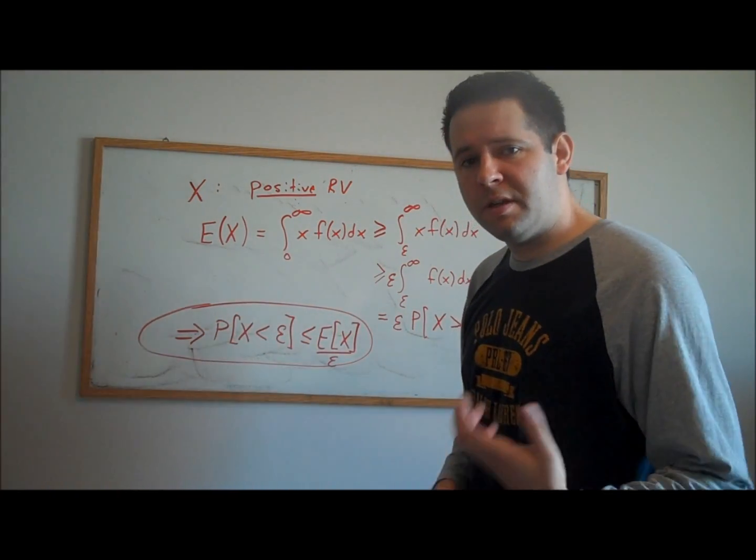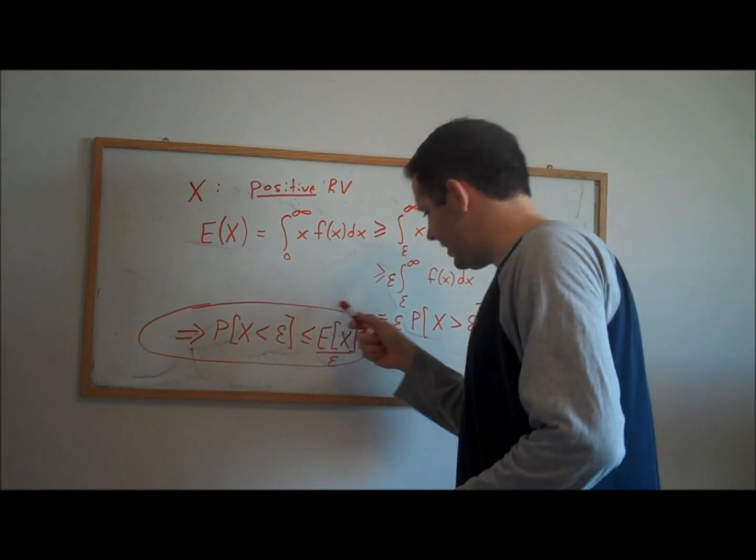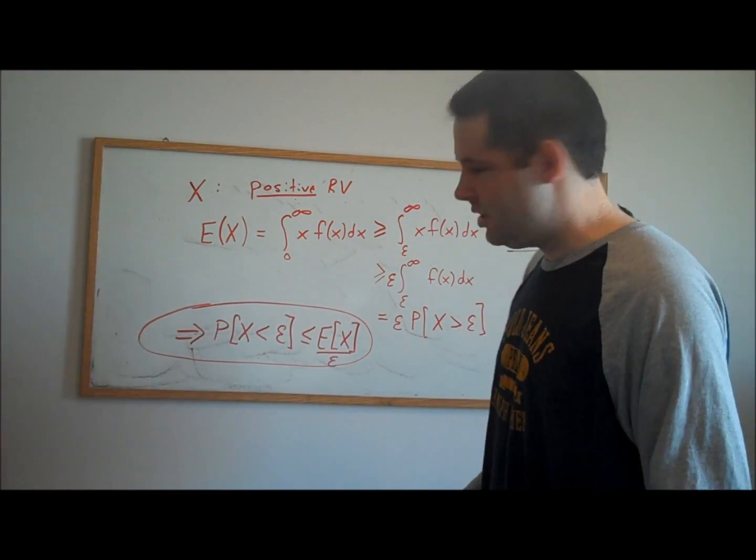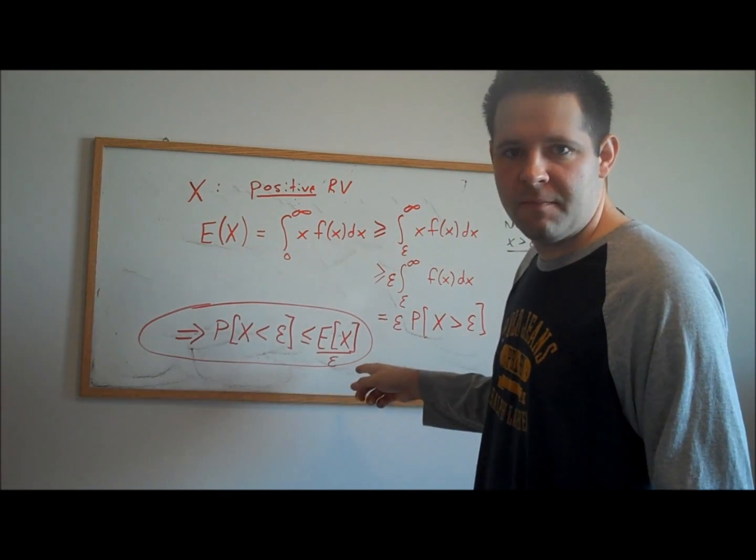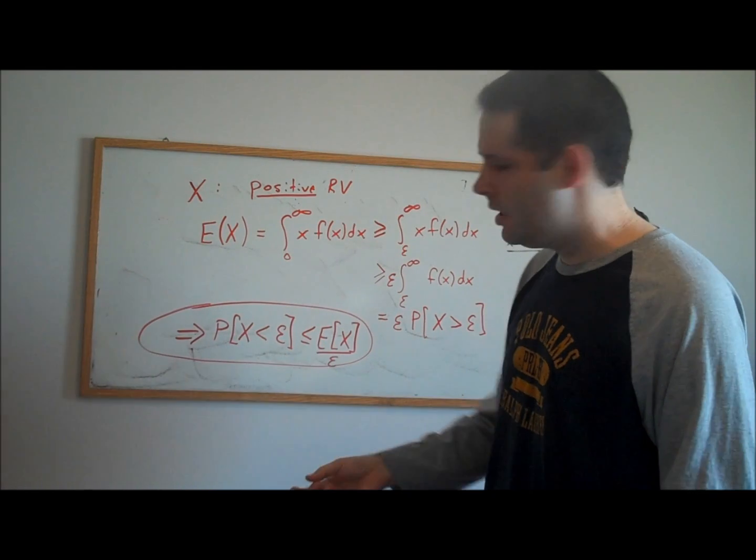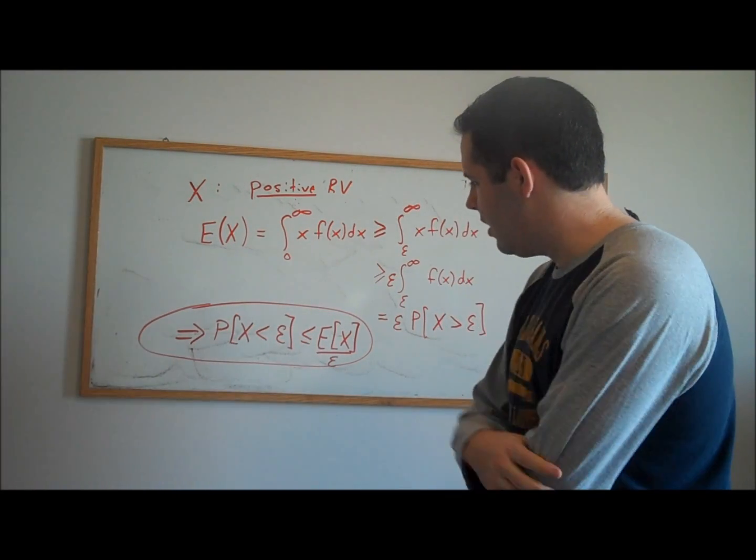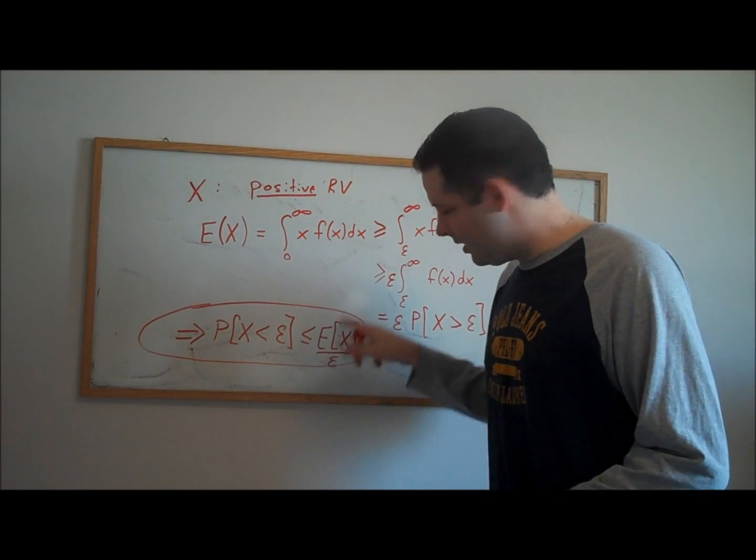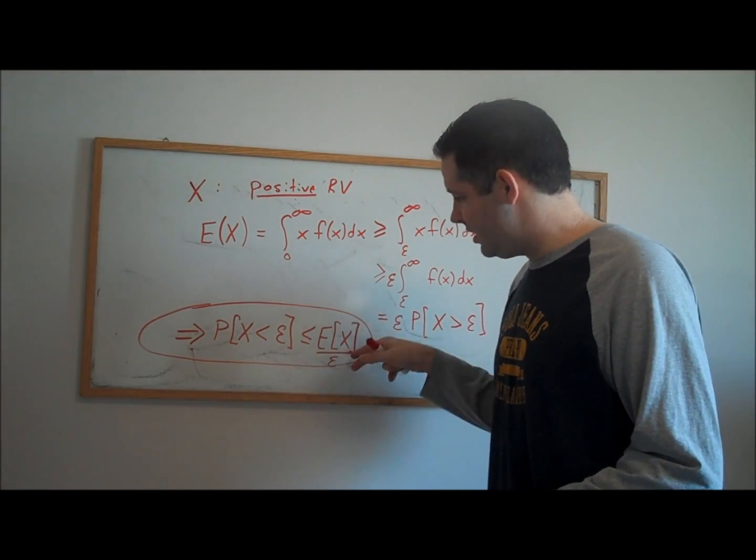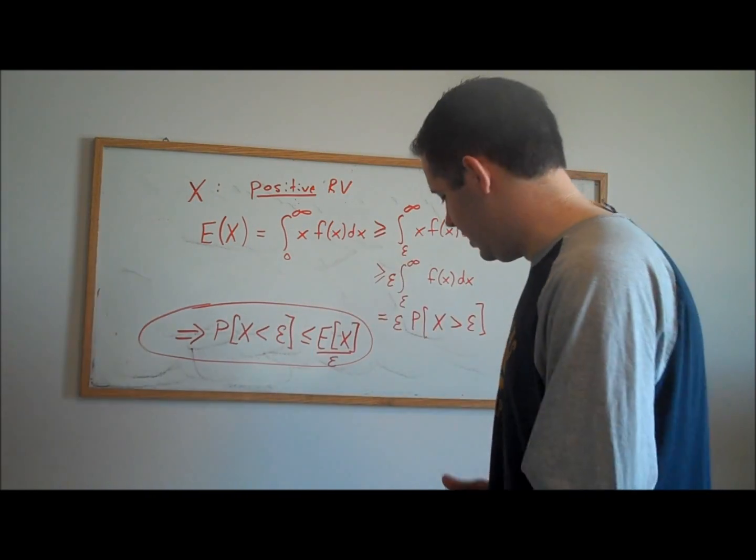This is going to be incredibly useful in getting convergence results because often it's easy to compute expectations of positive random variables, but not so easy to compute probabilities, especially if we don't know the distribution of that random variable. If we can show that the thing on the right hand side converges to zero, then this random variable here must converge in probability.